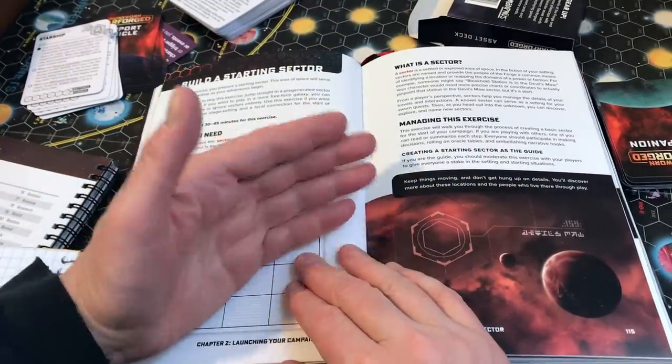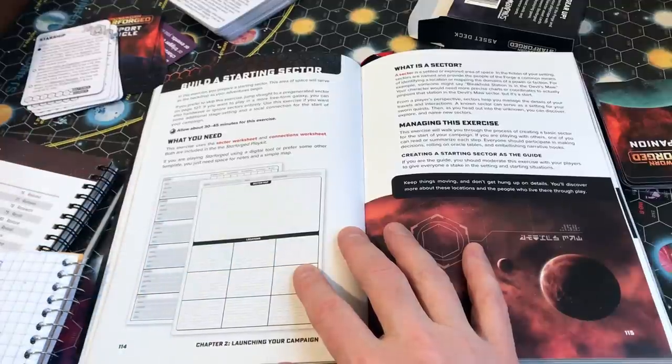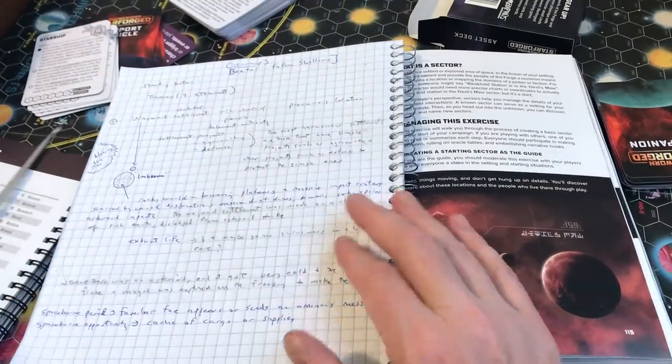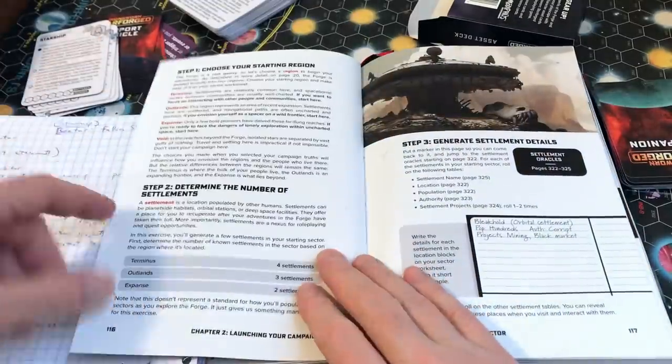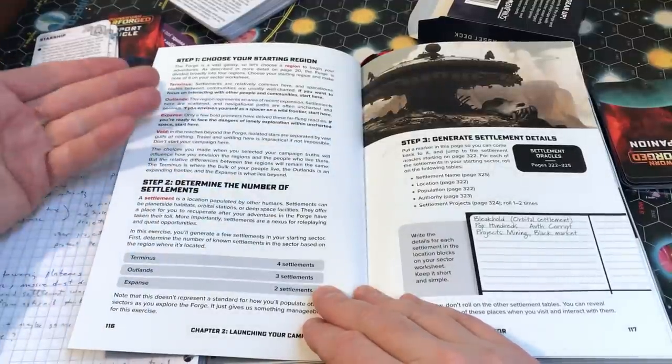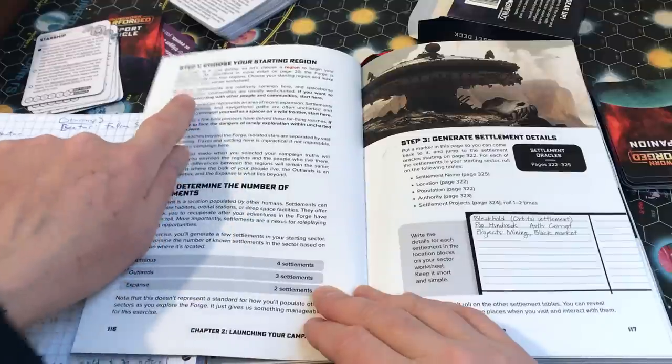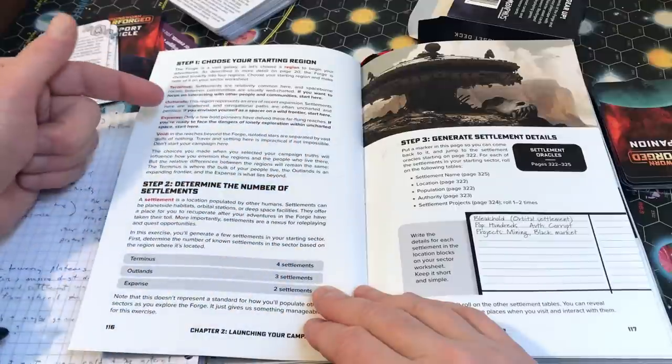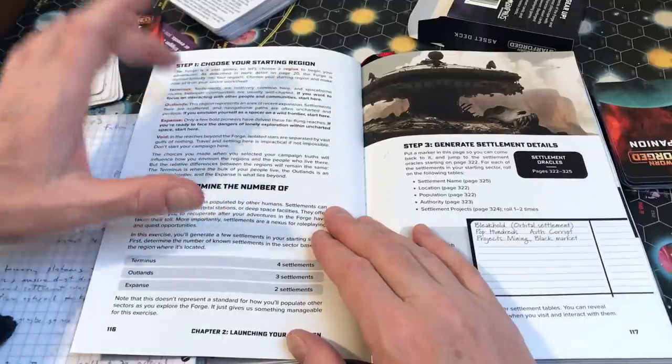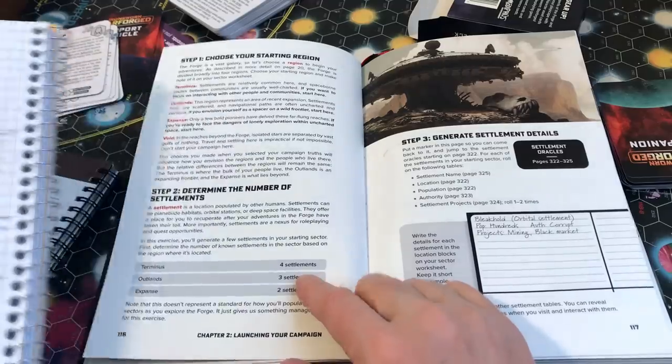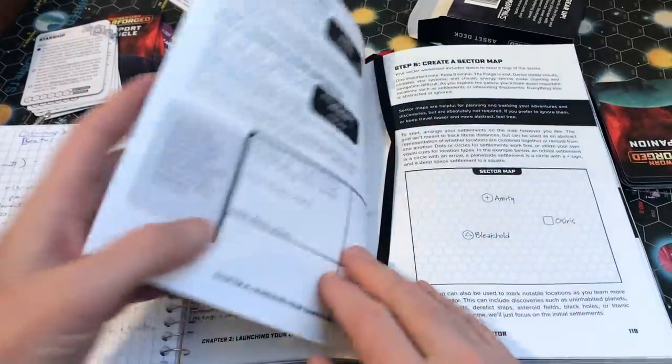There are sector worksheets as well as connection worksheets, meaning connections to NPCs that you may meet. As I mentioned at the outset of the video, I'm not using them. I think they're actually extremely useful to a player, but I did not make use of them for the purpose of this video because I wanted to keep it all in one notebook to refer back to it. And basically, what I did was I followed the exercises and rolled on the random tables to determine what type of area, the starting region we were in. I chose to start at the terminus with four settlements, and I only ended up developing really one to two settlements because I'm going to come back as my story evolves and build out the other settlements.